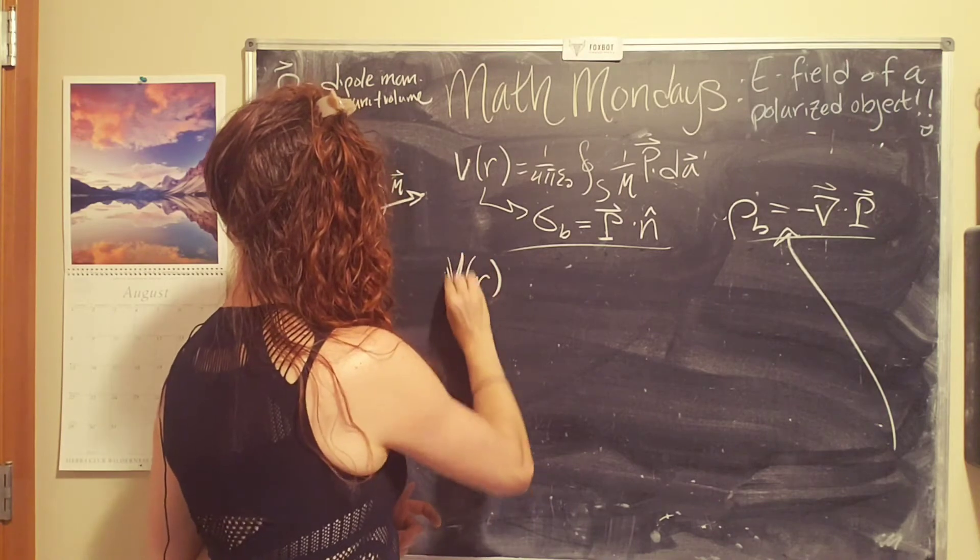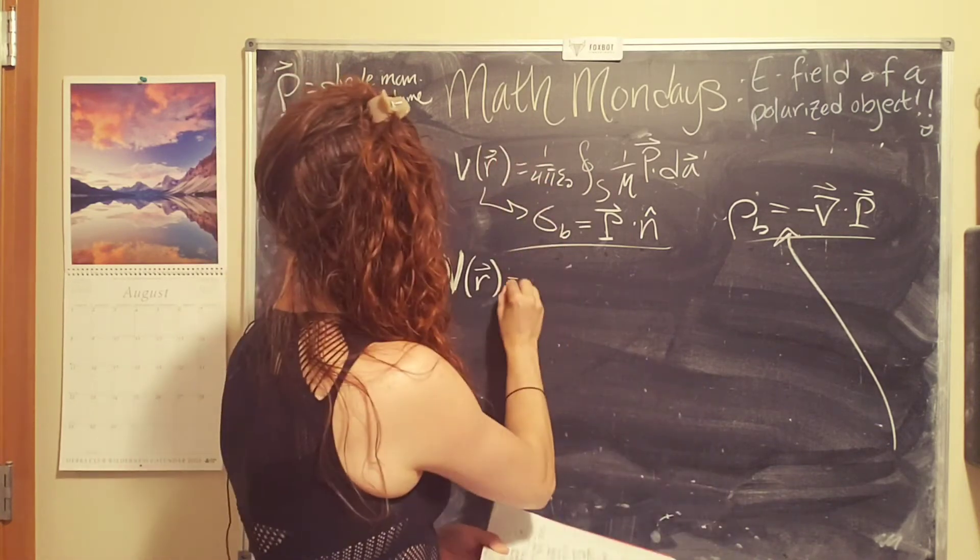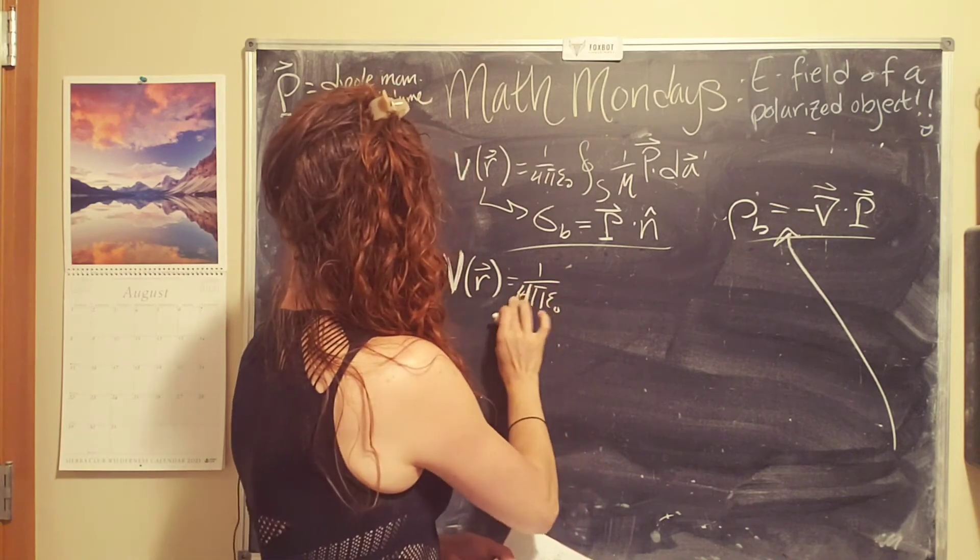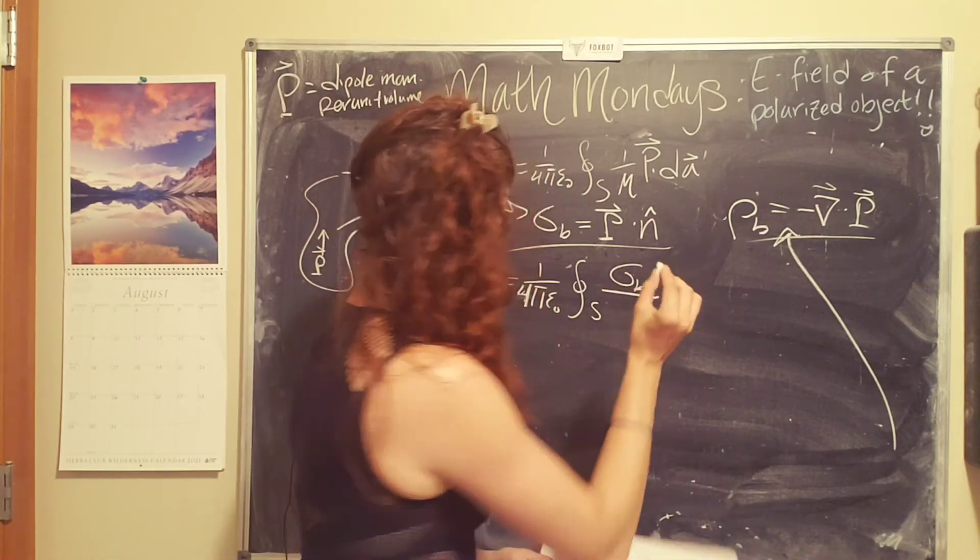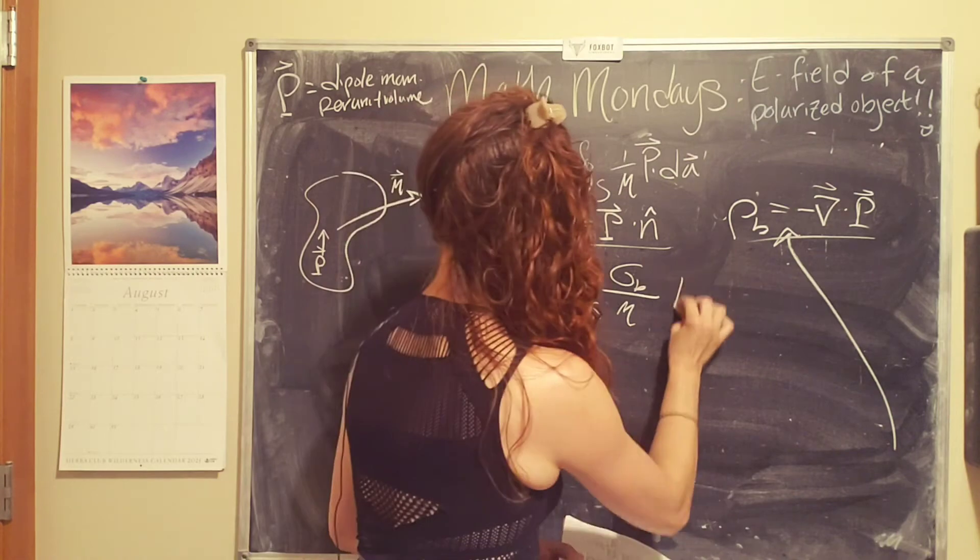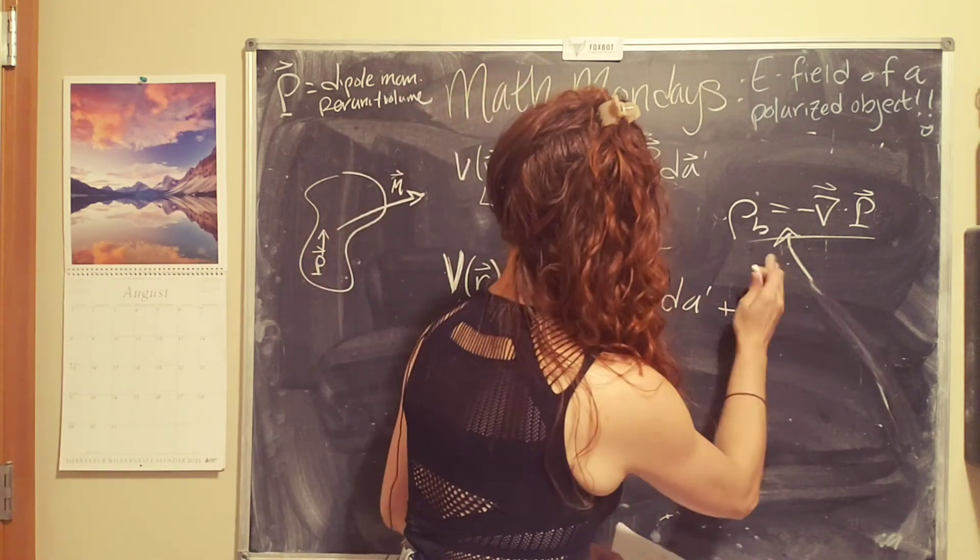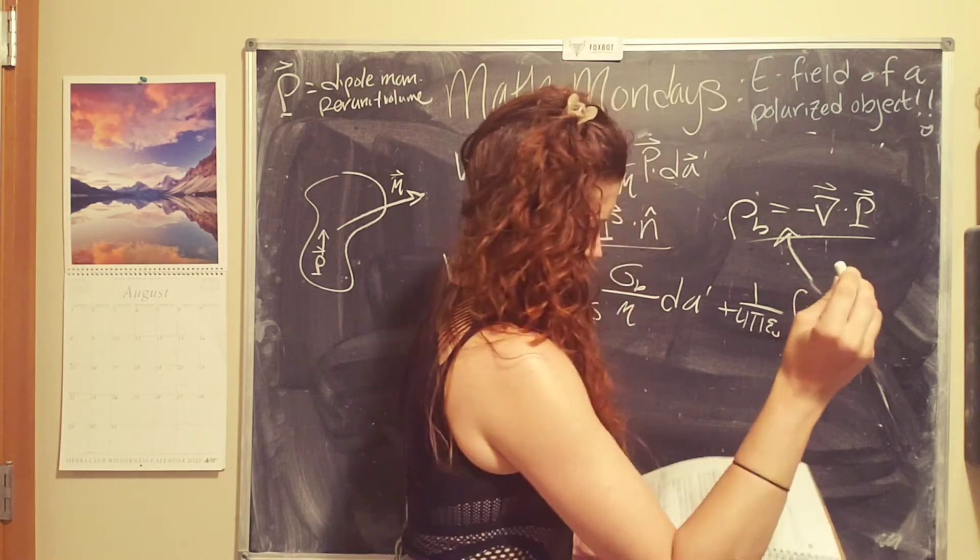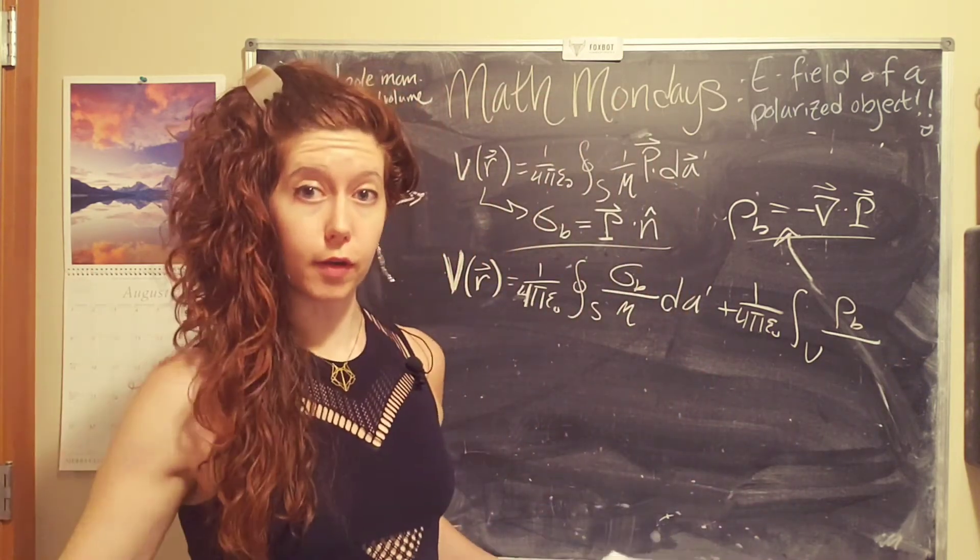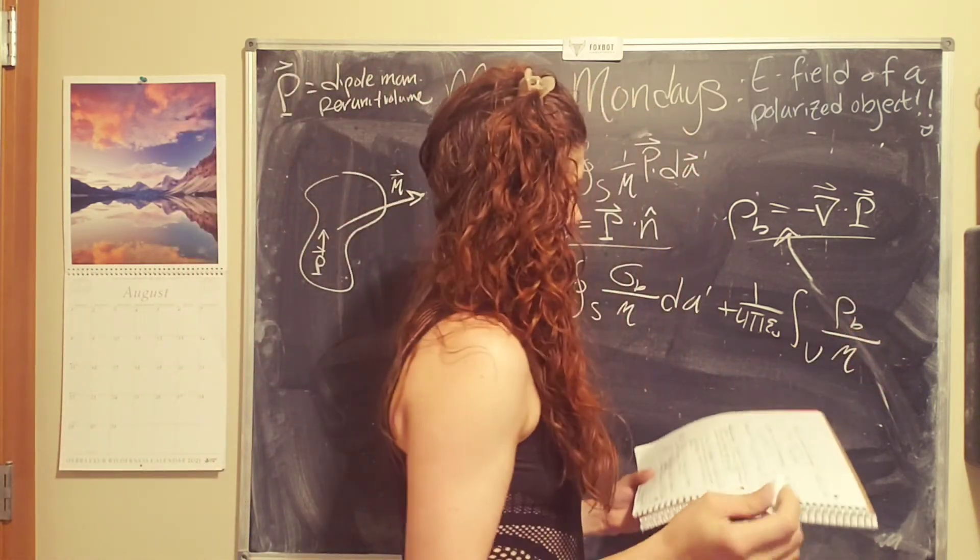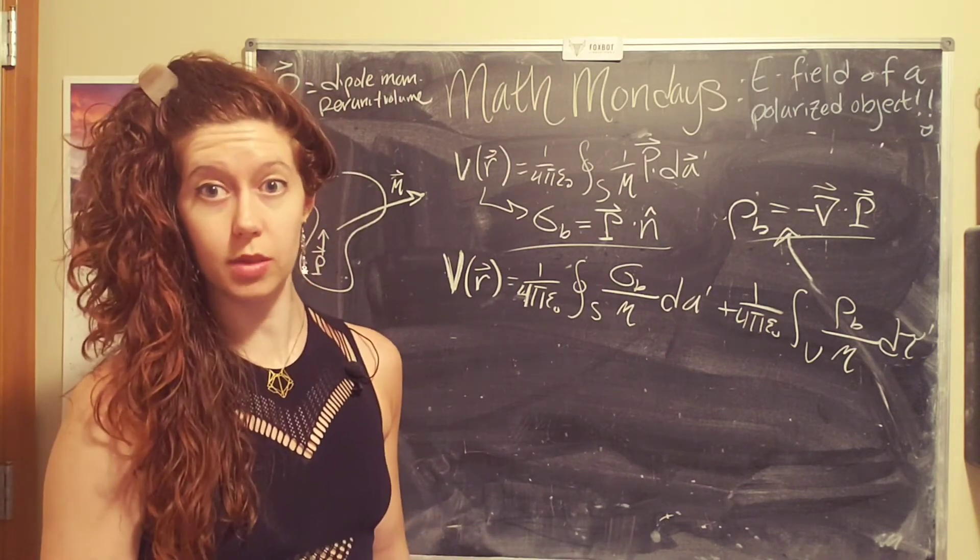And we can rewrite our potential just not based on the polarization, but based on these surface charges. So now we have our potential equals 1 over 4 pi epsilon naught integral over the surface of the surface charge over script R, the distance that you are looking at, dA prime plus 1 over 4 pi epsilon naught over integral over the volume. And then you integrate over the volume density divided by script R over the total volume. So that was a lot of math.